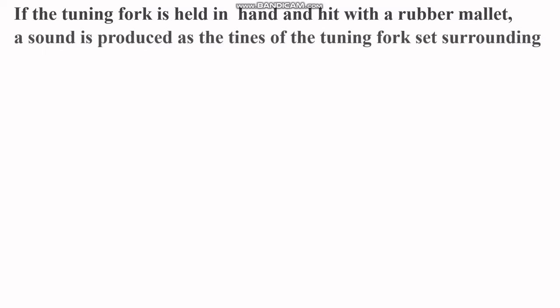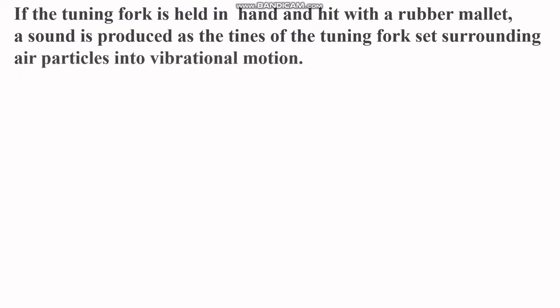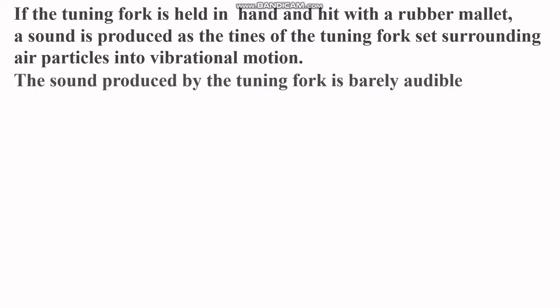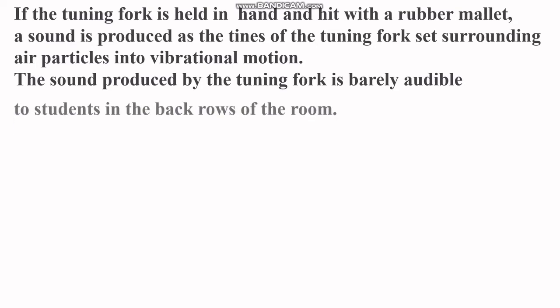Similarly, if a tuning fork is held in hand and hit with a rubber mallet, a sound is produced as the tines of the tuning fork set surrounding air particles into vibrational motion. The sound produced by the tuning fork is barely audible. If you strike a tuning fork on a rubber pad and try to hear the sound, the sound is hardly audible — you are able to hear it only when you bring it close to your ears.